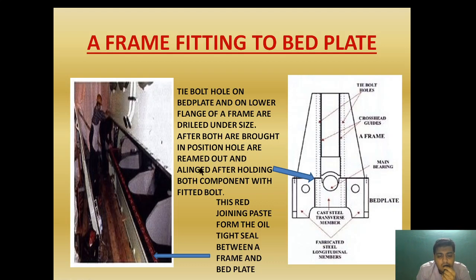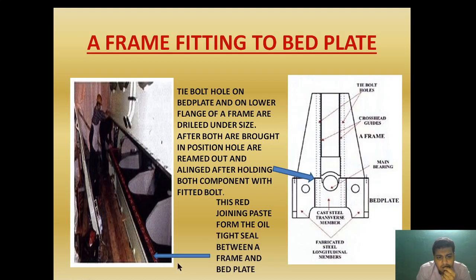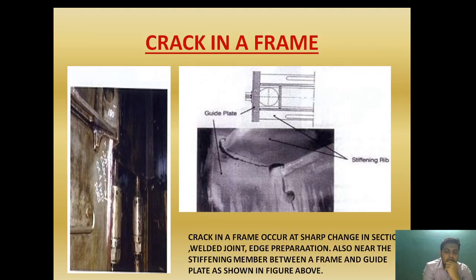After both components are bought into position, the holes are reamed out and aligned while holding both components with fitted bolts. The holes in both the A-frame and bed plate are reamed correctly so the tie bolt can pass through. A red joining paste is applied over the transverse girder to provide an oil-tight seal between the A-frame and the bed plate.